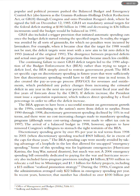In reality, the trigger was avoided by all sorts of gimmicks, for which no penalties were incurred by lawmakers. For example, when it became clear that the target for 1988 would not be met, the deficit targets were reset with a new aim to hit zero deficit by 1993 instead of the original 1991. The divergence between projected deficits and actual amounts grew larger, and the projections thus became much less credible. The continuing failure to meet the Gramm-Rudman-Hollings deficit targets led to the 1990 adoption of the Budget Enforcement Act. Rather than trying to target a deficit level, the Budget Enforcement Act simply aimed to restrain government growth.